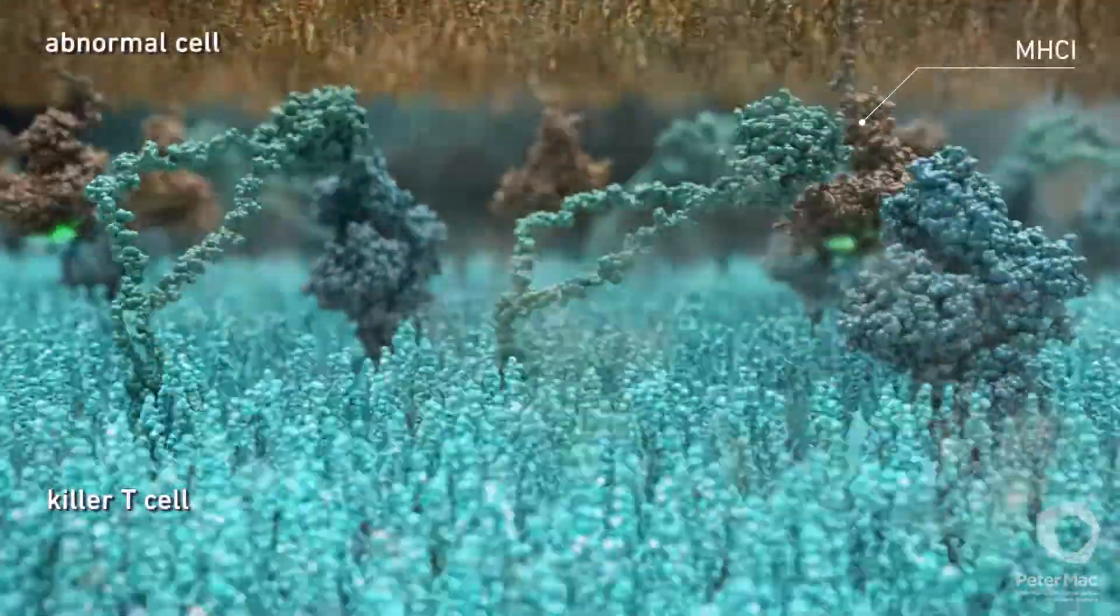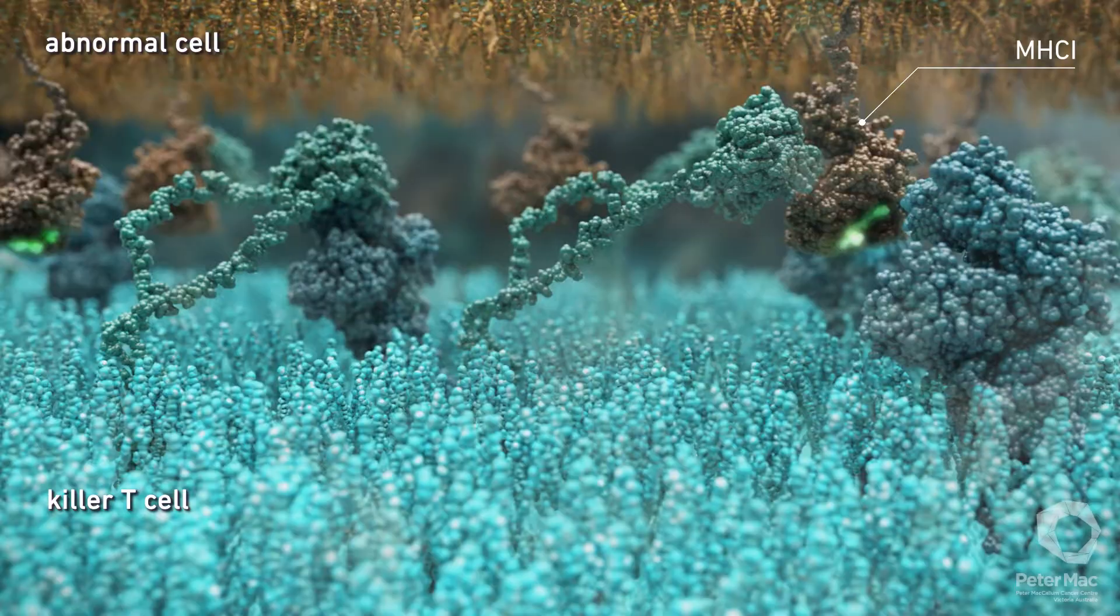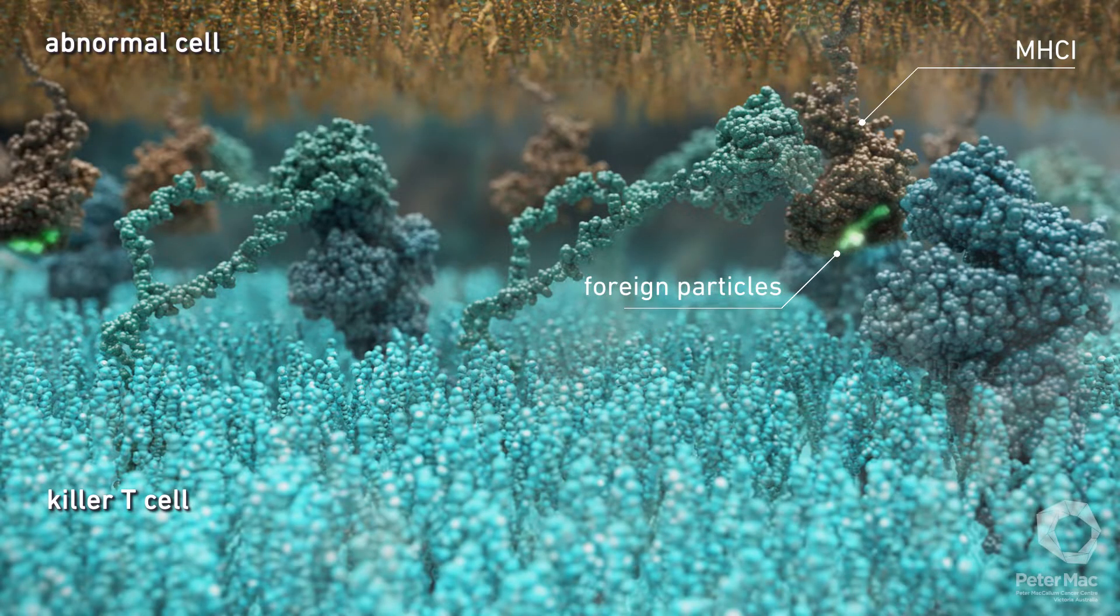Here a molecule called MHC1 on the surface of an abnormal cell presents foreign particles that can be detected by the killer T-cell receptor.